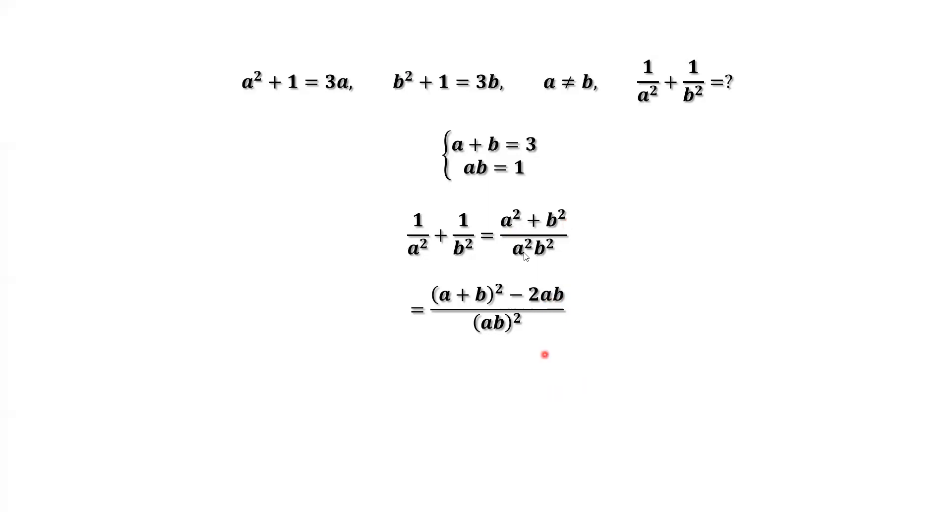Now we are ready to use this result. Replace a plus b by 3, a times b by 1. Then we have the final answer. 7 is the final answer.